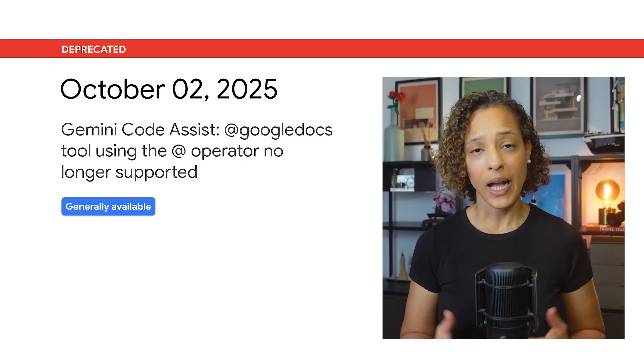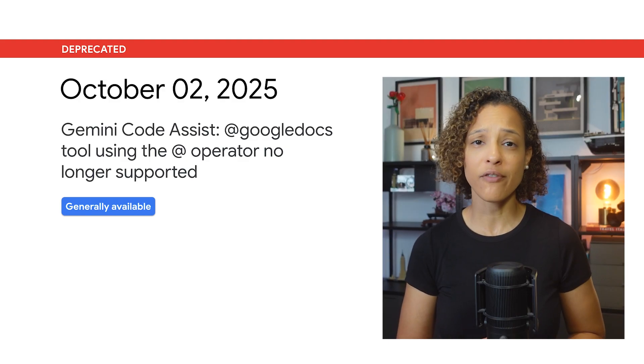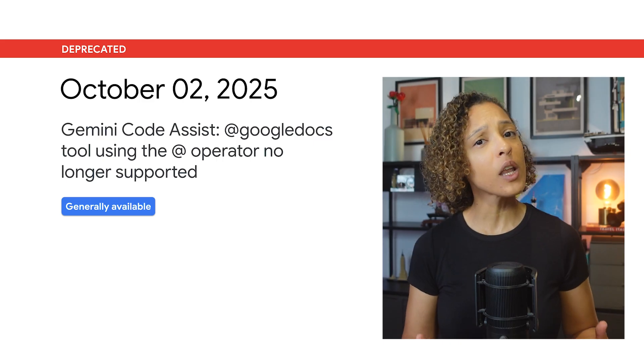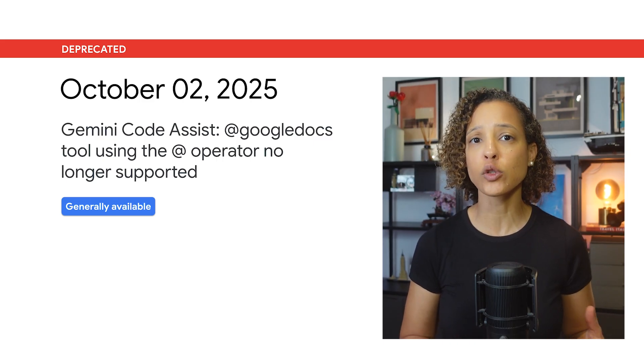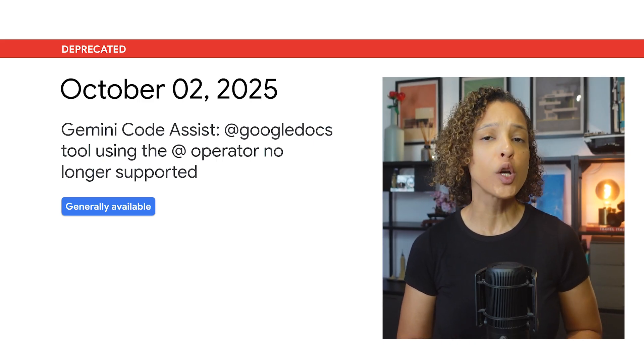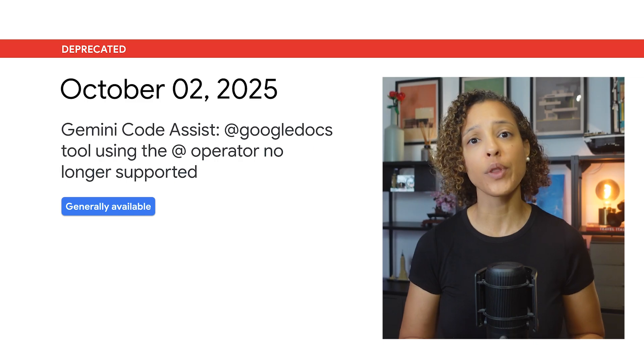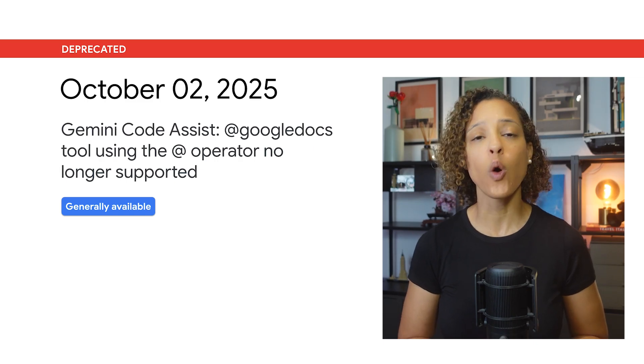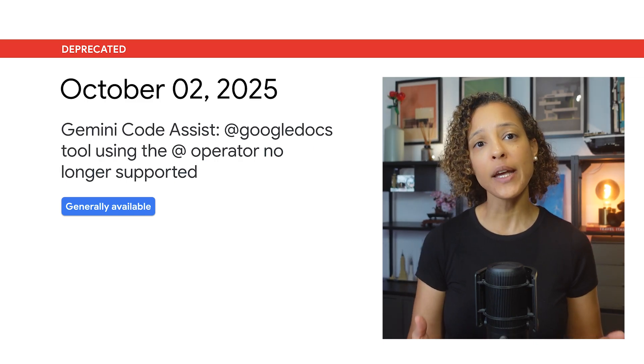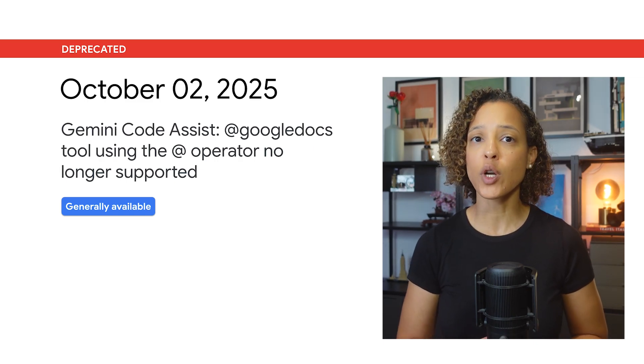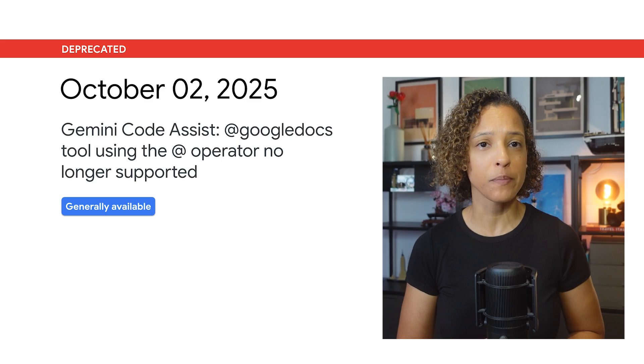If you want to learn more about having your Chat App send private messages, check out the video linked in the top right corner of the screen. After October 14th, 2025, calling Gemini CodeAssist at Google Docs tool using the @ operator with the tool name won't work. Gemini CodeAssist tools are replaced by Agent Mode.